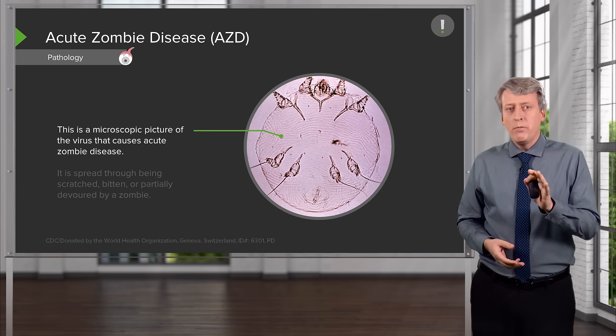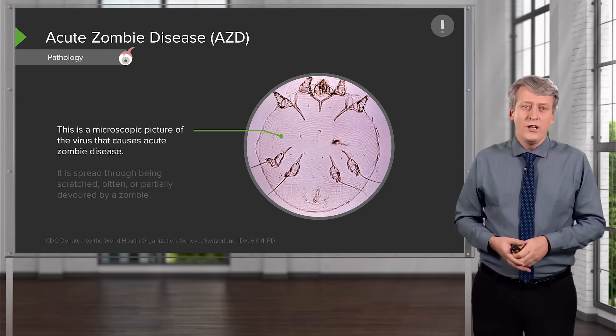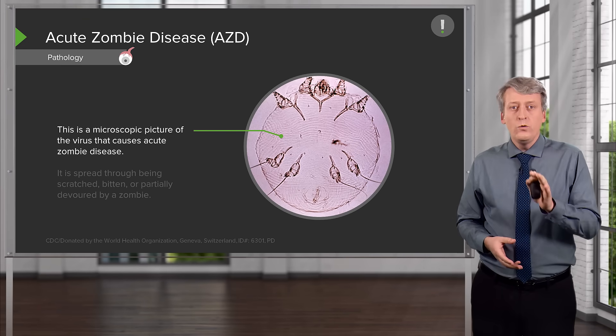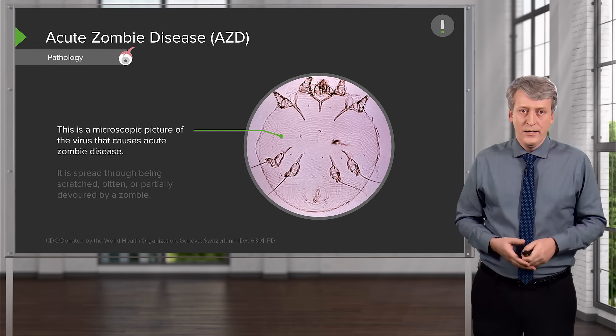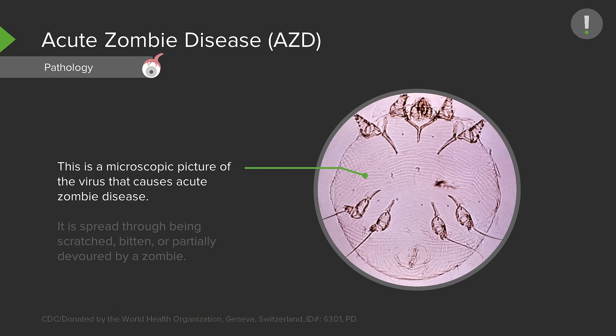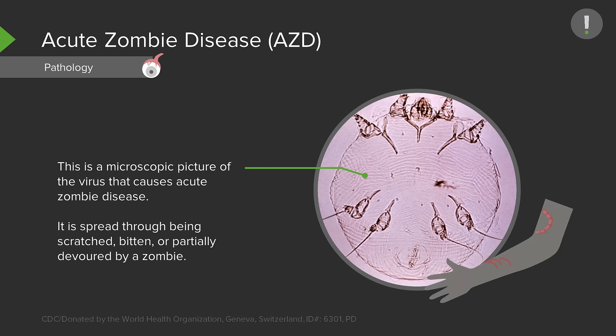Let's review the basic physiology of acute zombie disease, or AZD. Here is a microscopic picture of the virus that causes acute zombie disease. It is spread through being scratched, bitten, or partially devoured by a zombie.